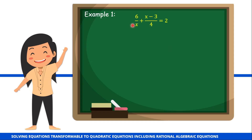Our rational equation is 6 divided by x, plus x minus 3 all over 4, is equal to 2. First, let's identify the restricted value of x. For the first denominator, the restricted value of x — the value we cannot substitute — is 0, because that would give us 6 over 0, which is not allowed. For the second expression, x minus 3 all over 4, there is no restricted value since the denominator is 4. So our restricted value is 0.